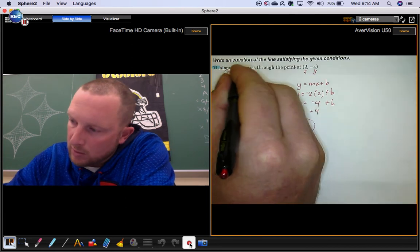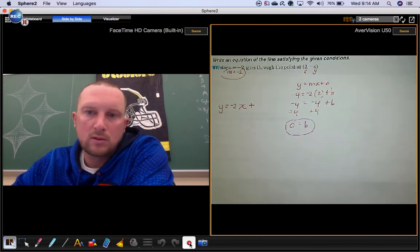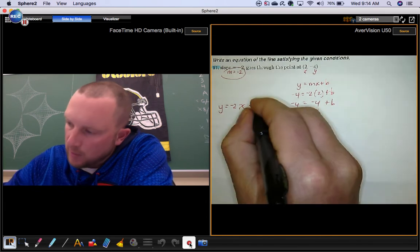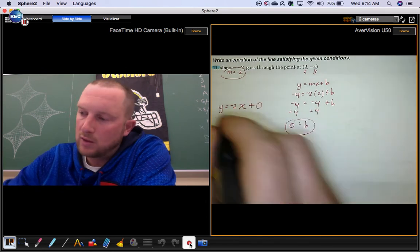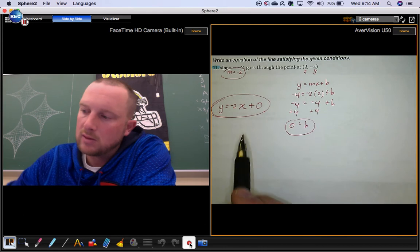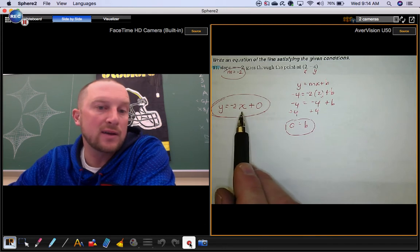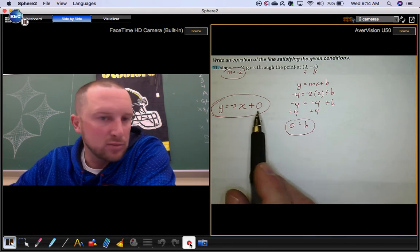We already had the slope. Put that 0 right here. The equation of your line is y equals negative 2x. If you want to put plus 0 on the end, you can.